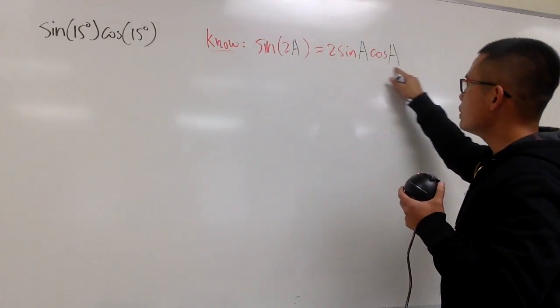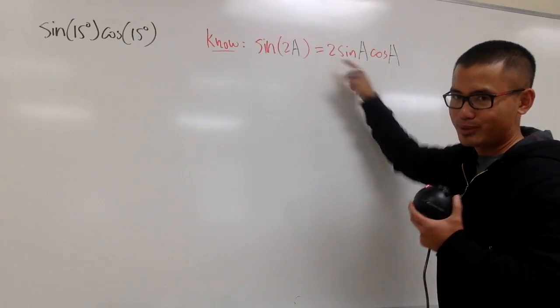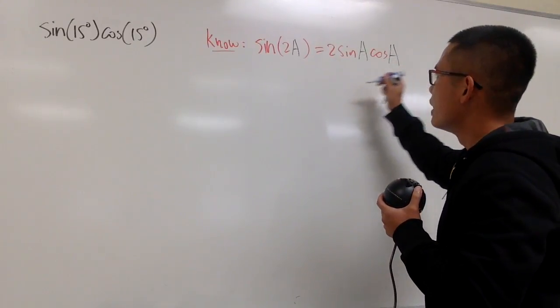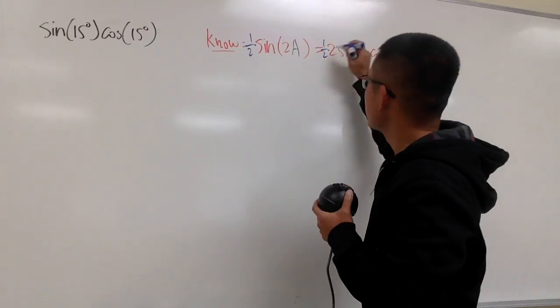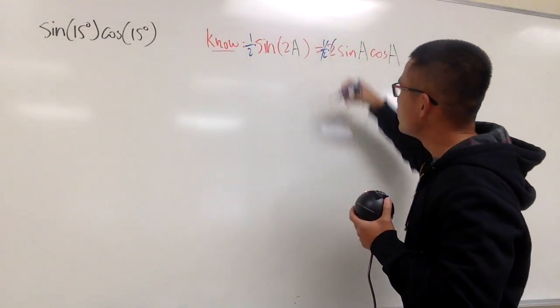Well, I just want to have this part, but I do not want to have this 2 right here. So what can we do? Looking at this identity right here, let's just go ahead and multiply 1 half on both sides. So that I can cancel out this 1 half and 2.